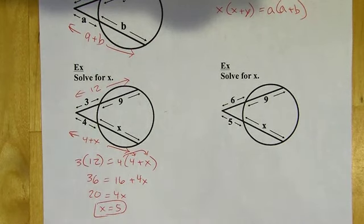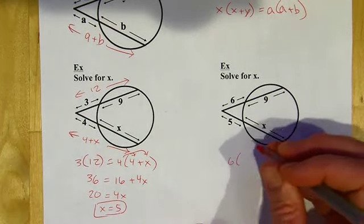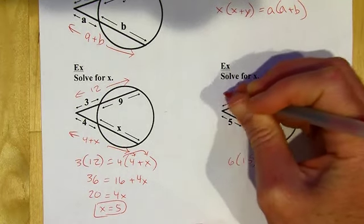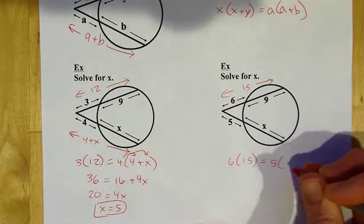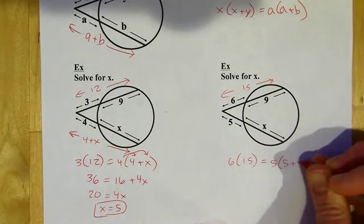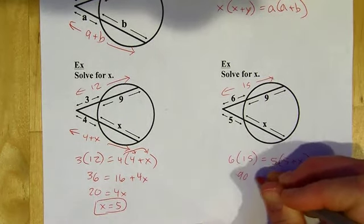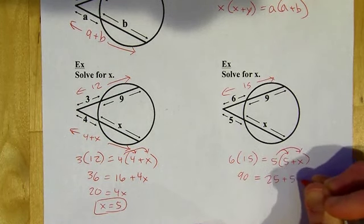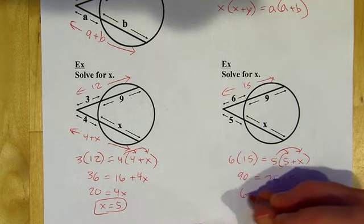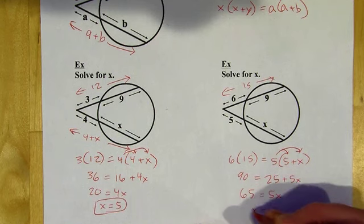You can pause and try the next one. Here we go: part on the outside times the whole thing — adding 6 and 9 gives 15, so it's 6 times 15. Equals part on the outside, 5, times the whole thing, 5 plus X. So 6 times 15 is 90. Subtract 25 from both sides, divide by 5, and X equals 13.